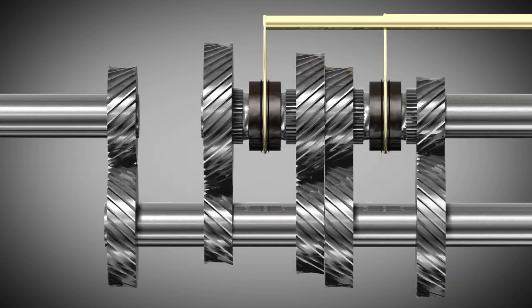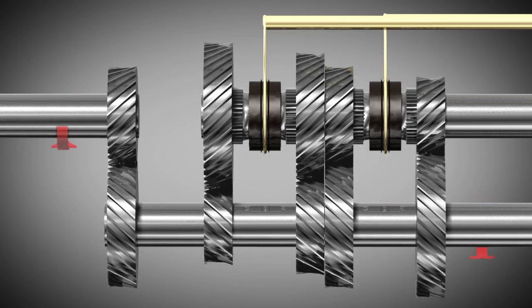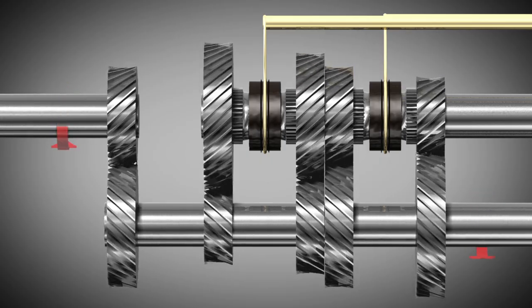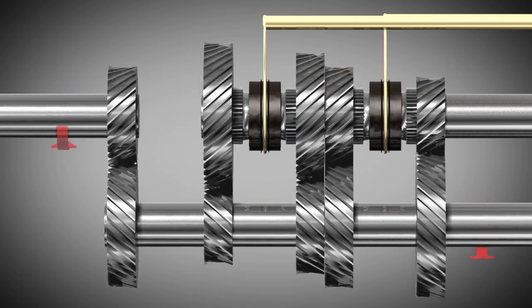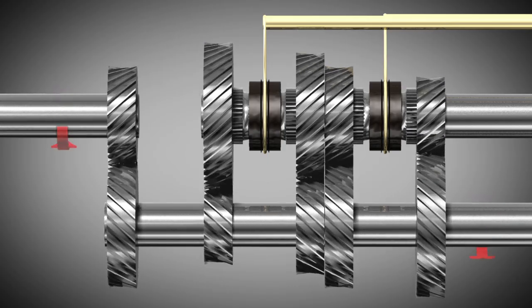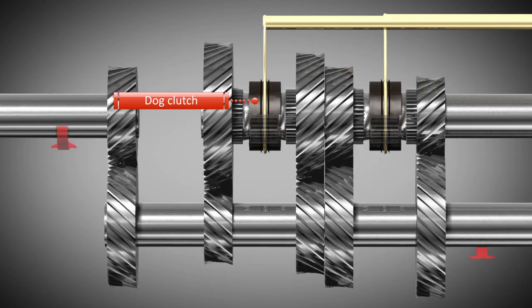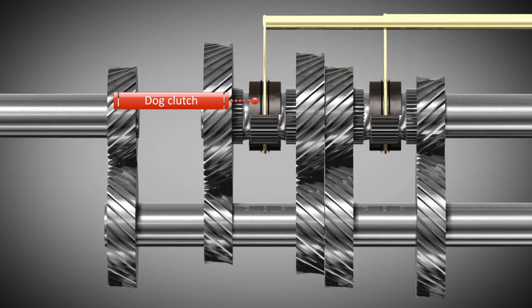The gear wheels of the input shaft and the counter shaft are fixed to their shafts. They rotate when their corresponding shaft rotates. However, the gear wheels of the output shaft are not fixed to the shaft and can freely rotate. Locking a gear wheel to the output shaft is possible through a dock clutch. Here, a tooth system is fixed to the shaft.